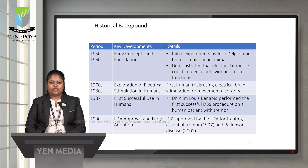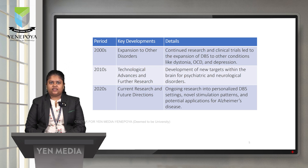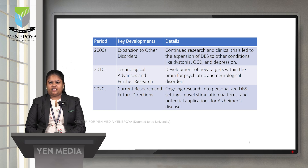In the 1990s, FDA approval and early adoption occurred: DBS was approved by the FDA for treating essential tremors in 1997 and Parkinson's disease in 2002. In the 2000s, continued research and clinical trials led to the expansion of DBS to other conditions like dystonia, OCD, and depression. In 2010, technological advances led to development of new brain targets for psychiatric and neurological disorders. In the 2020s, ongoing research focuses on personalized DBS settings, novel stimulation patterns, electrode upgrades, and potential applications for Alzheimer's disease.